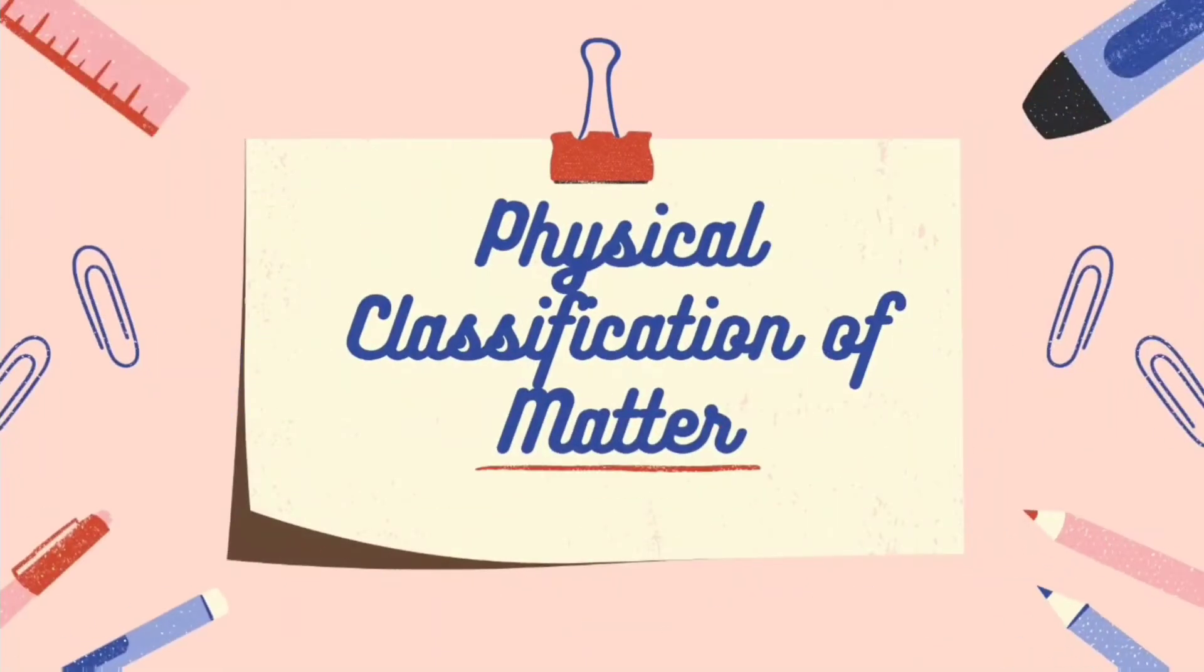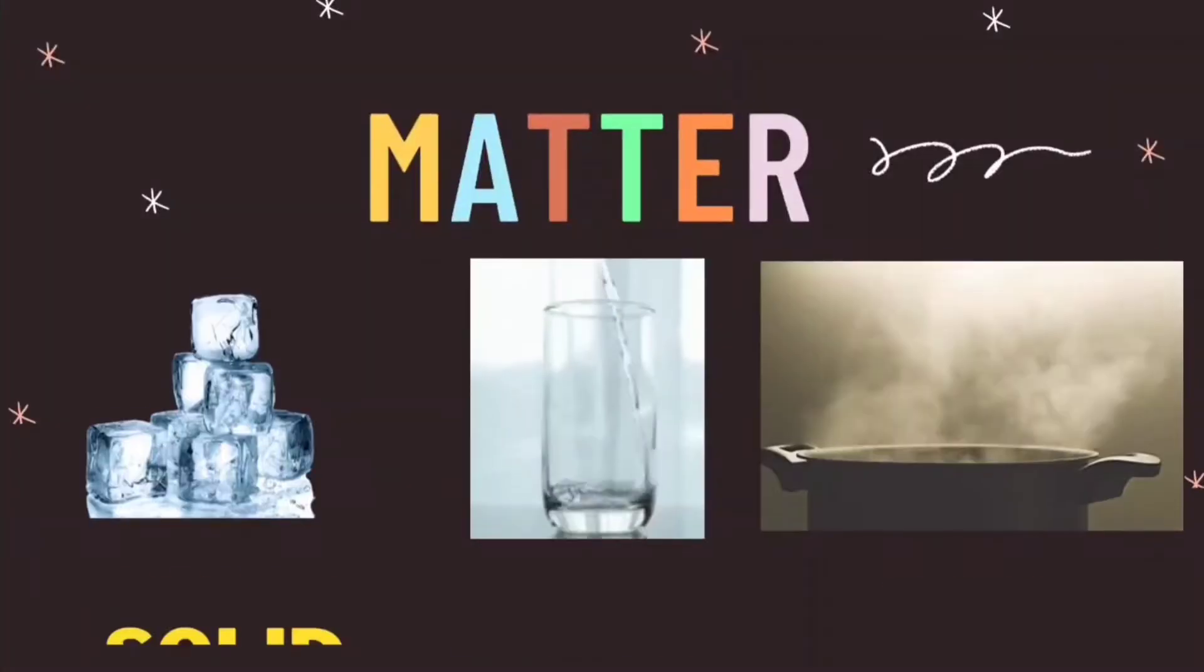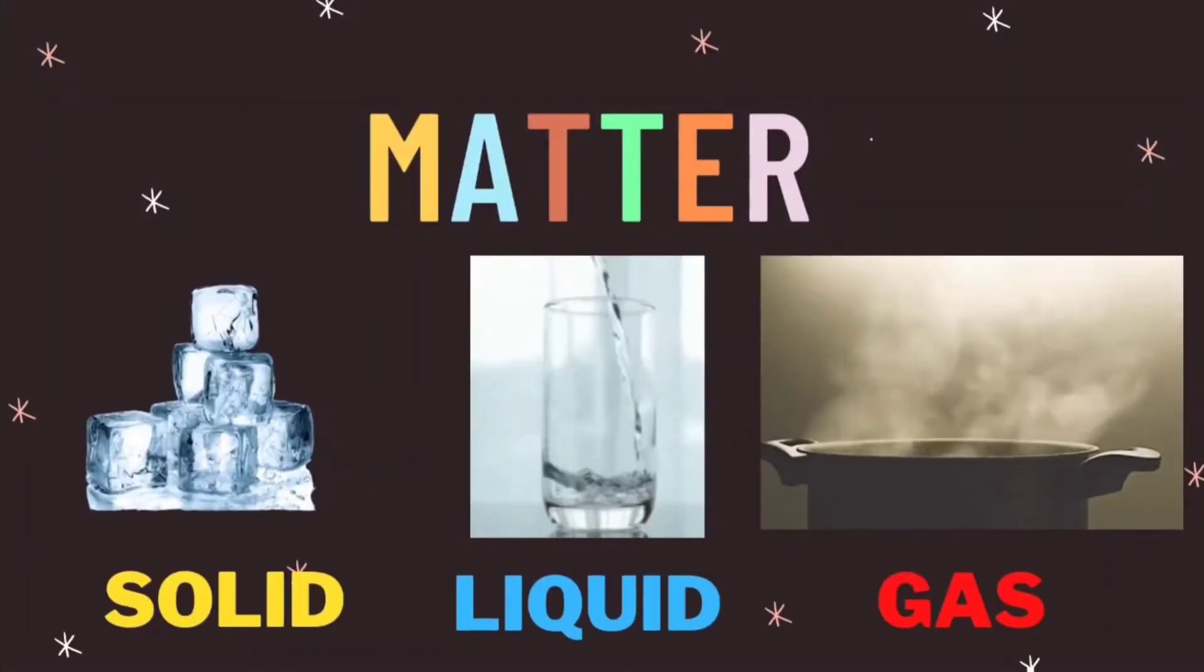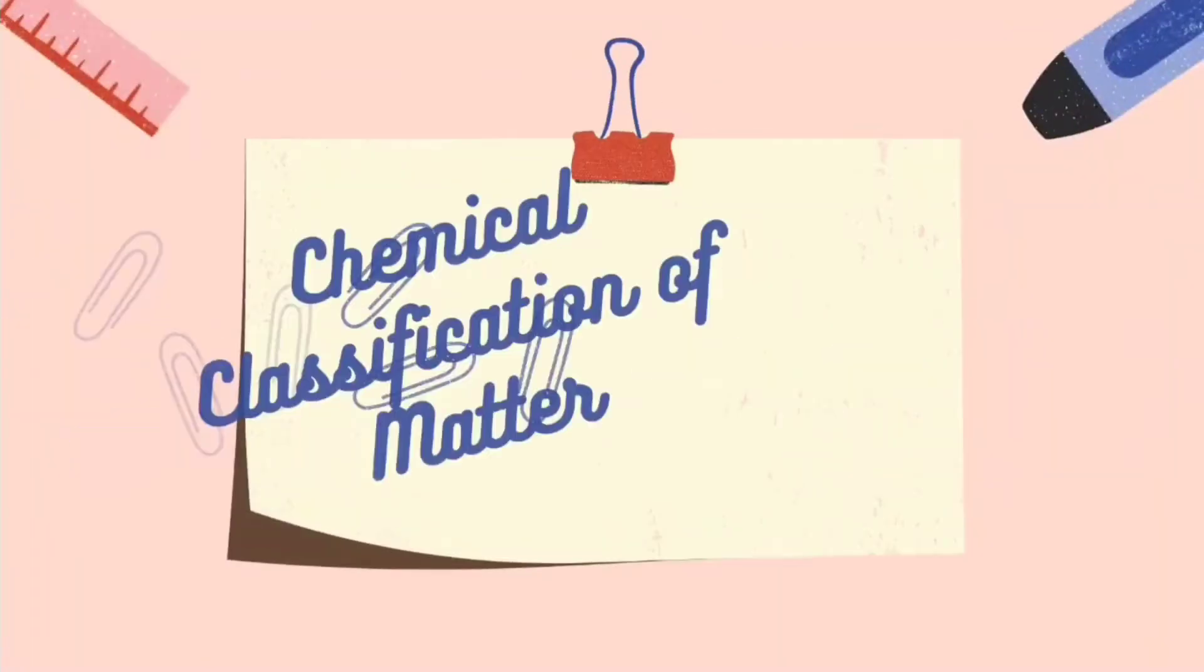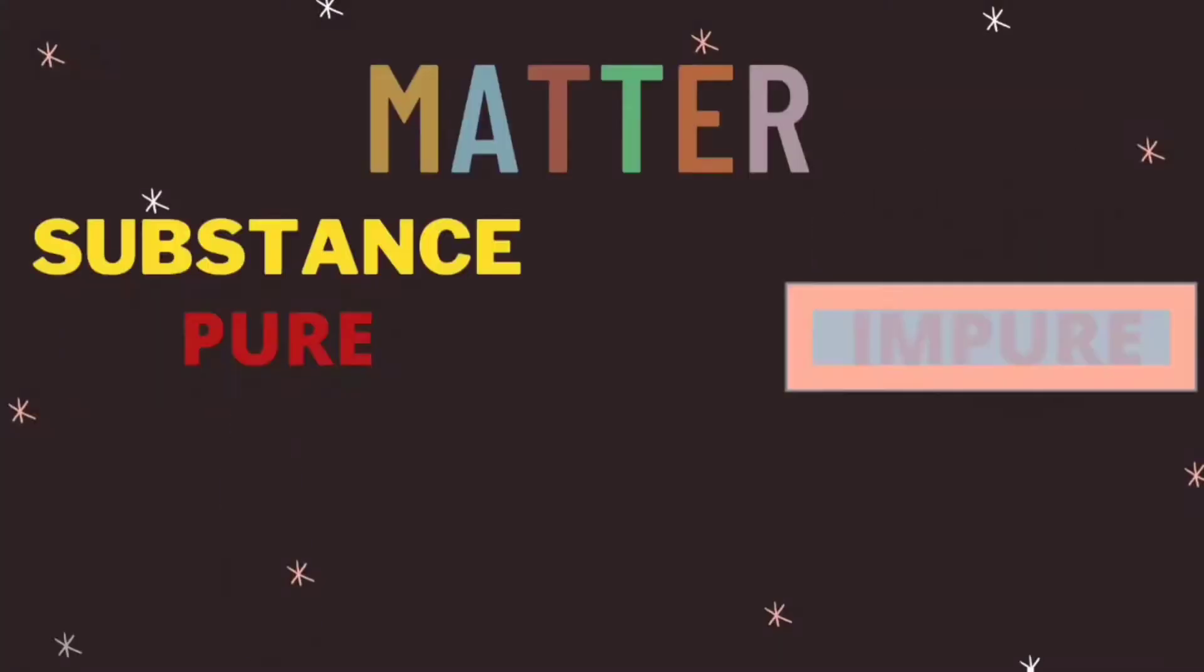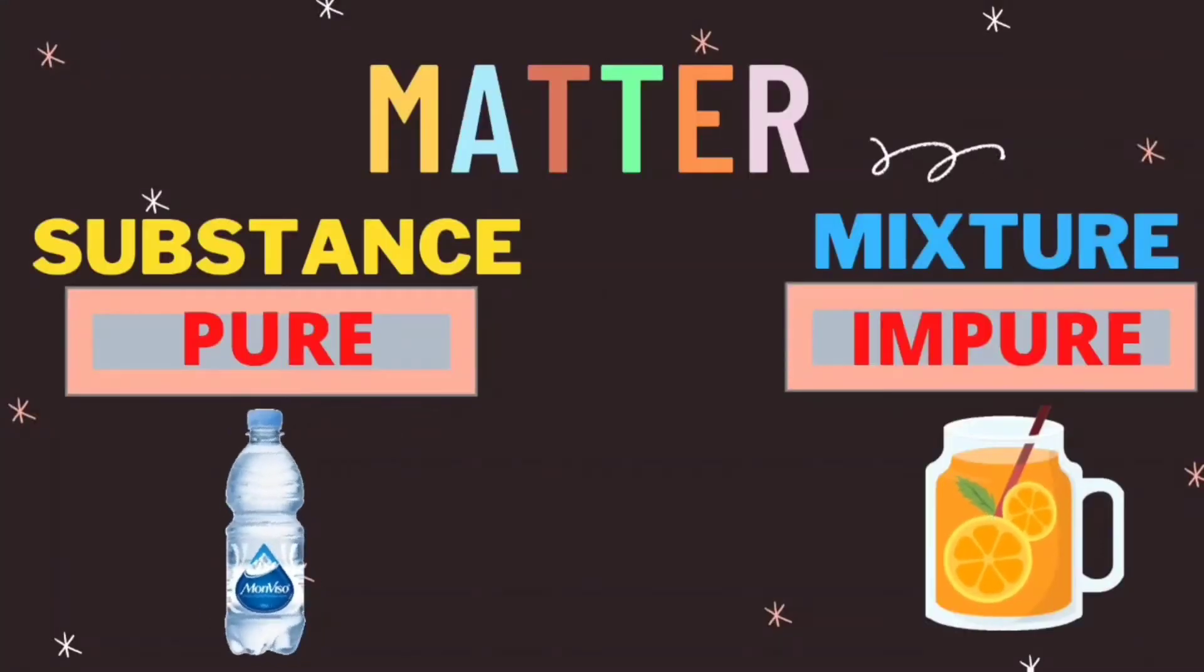At the physical classification, matter is classified into three states of matter: the solid state, liquid state, and gaseous state. Chemically, matter is classified into two groups: the pure substance and impure substance, or what we call the mixtures.